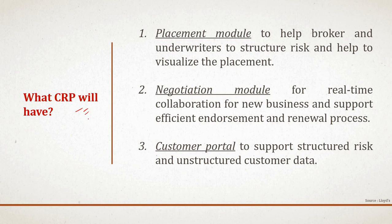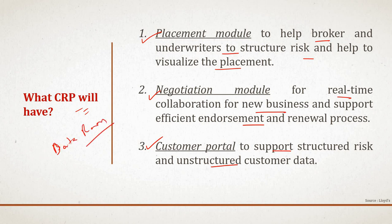The complex risk platform will have three major modules: the placement module, the negotiation module, and the customer portal. The placement module helps brokers and underwriters structure the risk and visualize the placement. The negotiation module enables real-time collaboration for new business and supports efficient endorsement and renewal processes. The customer portal supports structured and unstructured customer data. There is also a data room, which we will discuss in a subsequent slide.